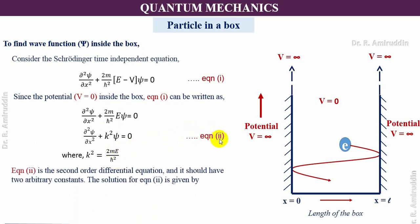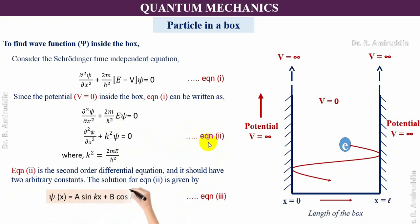Equation number two is a second-order differential equation and should have two arbitrary constants. The solution for equation number two is ψ(x) = A sin(kx) + B cos(kx) — equation number three — where A and B are arbitrary constants.